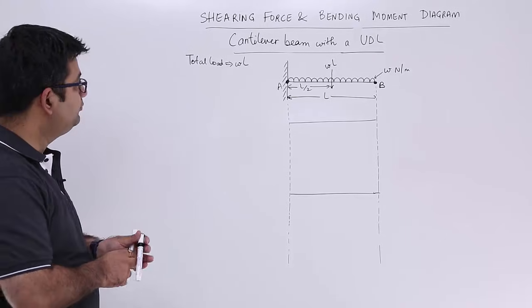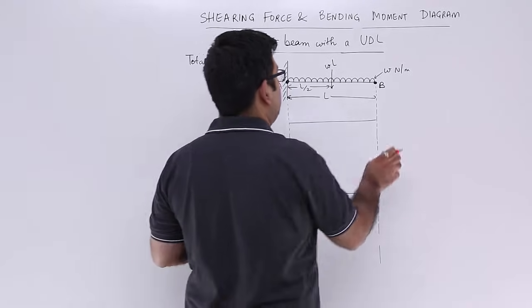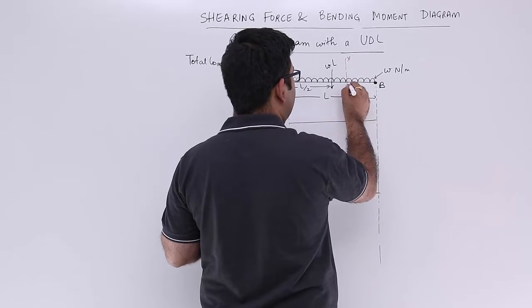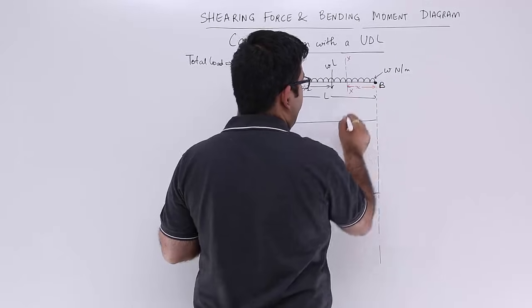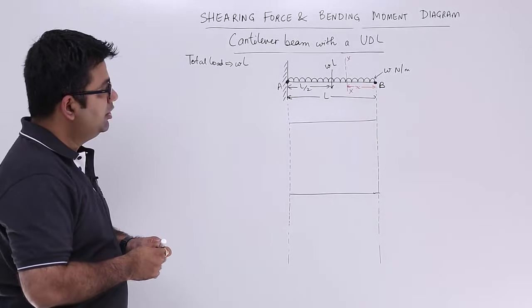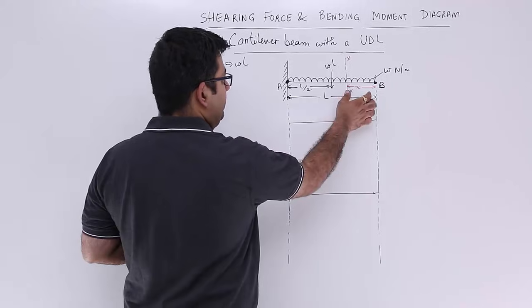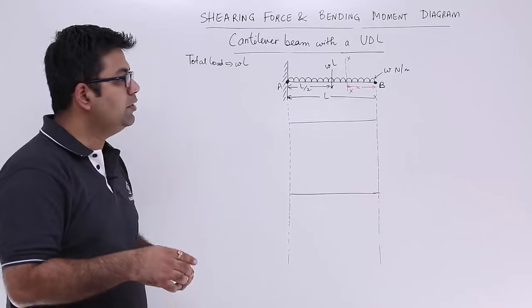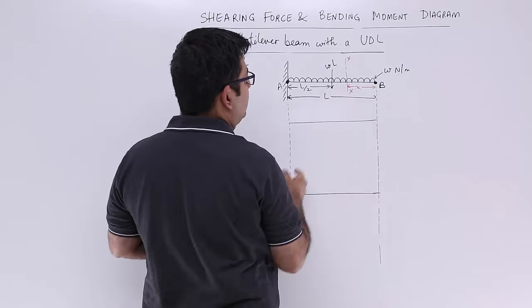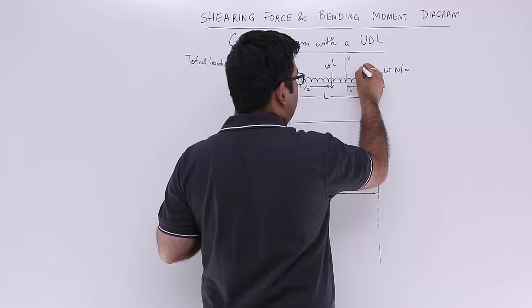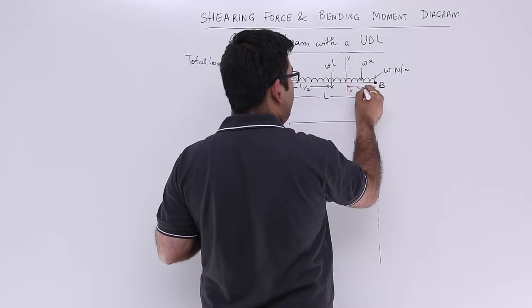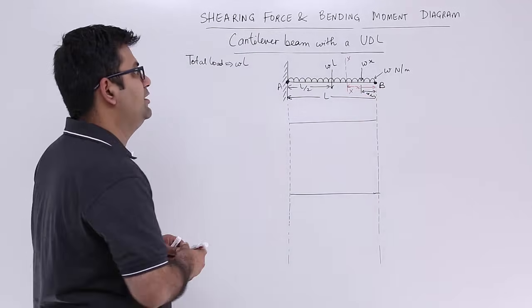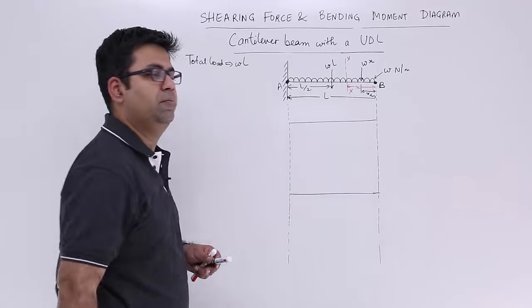Now let us again suppose a section XX at a distance of x from B. For this much length, what is the load? That is W into x, and that W into x is acting at the midspan of this much length, that is x by 2. So this is W into x and it acts at x by 2 from either the section XX or from the point B.